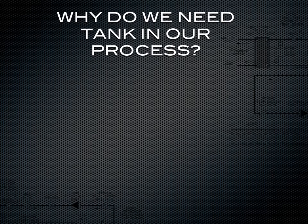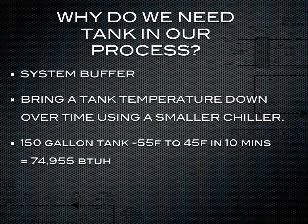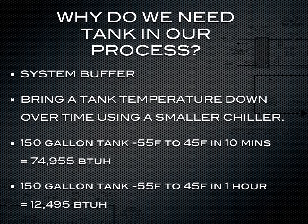Another reason to have a tank in your process is it can act as a system buffer. A system buffer is basically bringing a tank temperature down over time using a smaller chiller. For example, if you had a 150-gallon tank starting at 55°F, you could bring it down to 45°F in about 10 minutes with a 6-plus-ton chiller, or in about an hour with a 1-ton chiller. This is a good solution if you don't have a 6-ton chiller in your budget but you have a 1-ton.